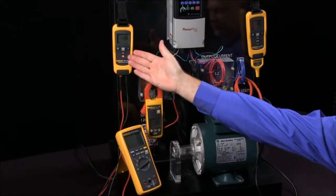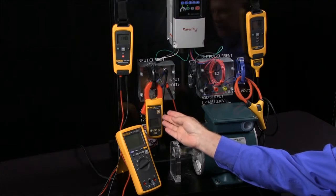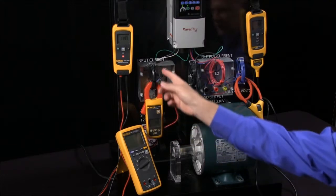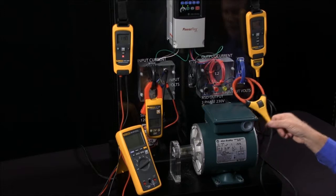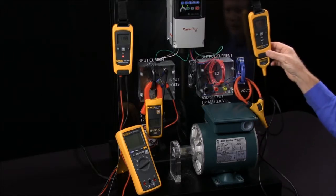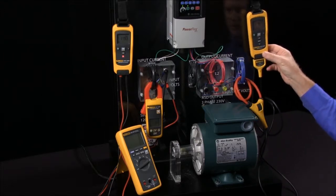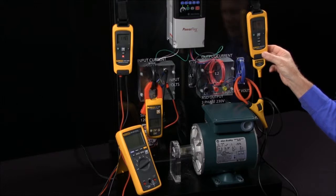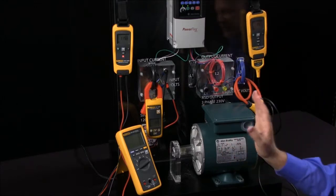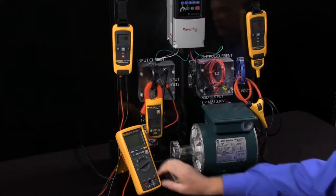So we have a voltage module, a plastic clamp current module on the input current of the drive, and we have our iFlex module on phase three going between the drive and the motor. So we can remotely take these measurements at a distance. We could actually have this in a cabinet and we could be away from this.